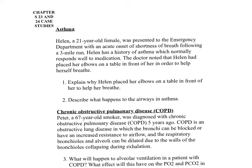Question one: explain why Helen placed her elbows on a table in front of her to help her breathe. Helen was fixing her upper limbs in place so she could begin to use her accessory muscles of respiration. The accessory muscles include the pectoralis major, which helps to increase the volume of the thoracic cage, making it easier to inspire or inhale. This has the same effect as placing your arms behind your head after finishing a run.